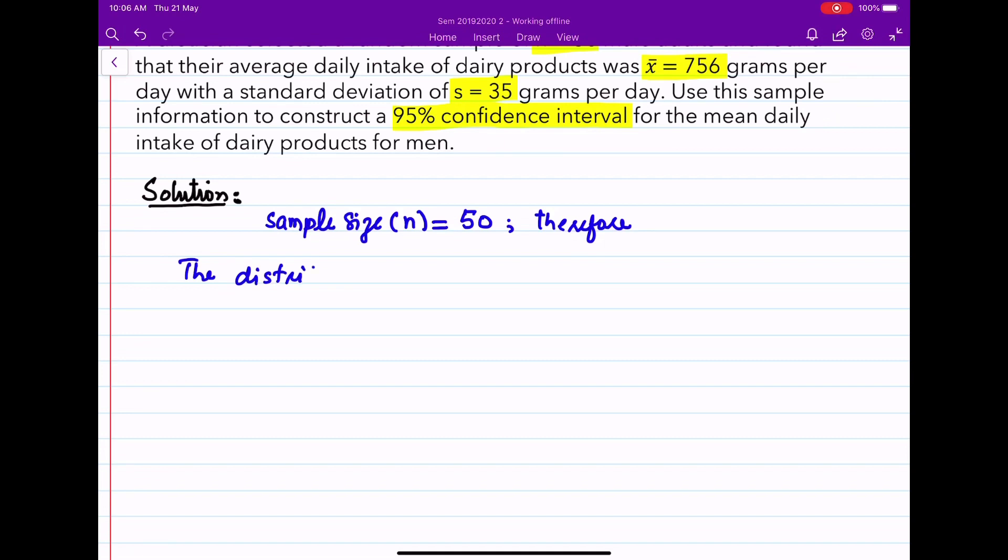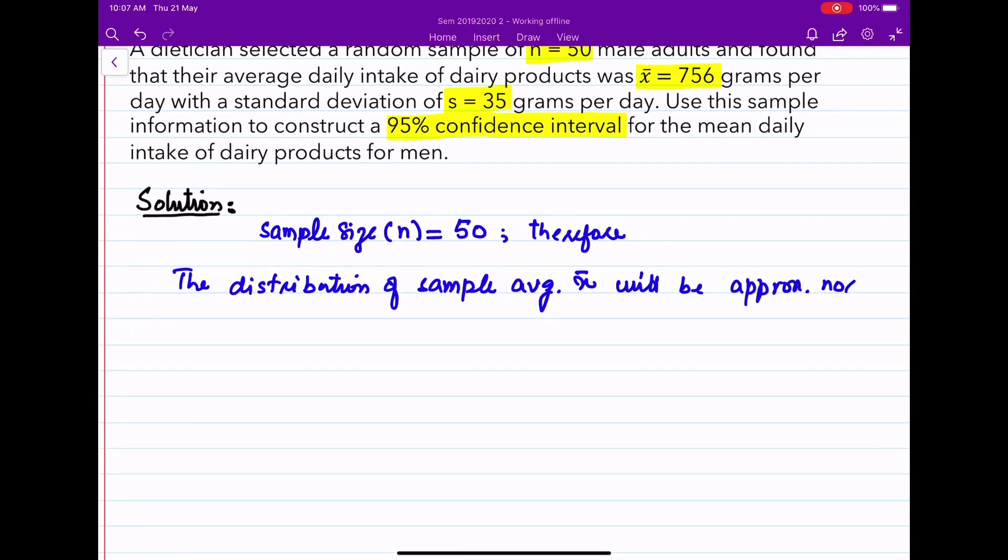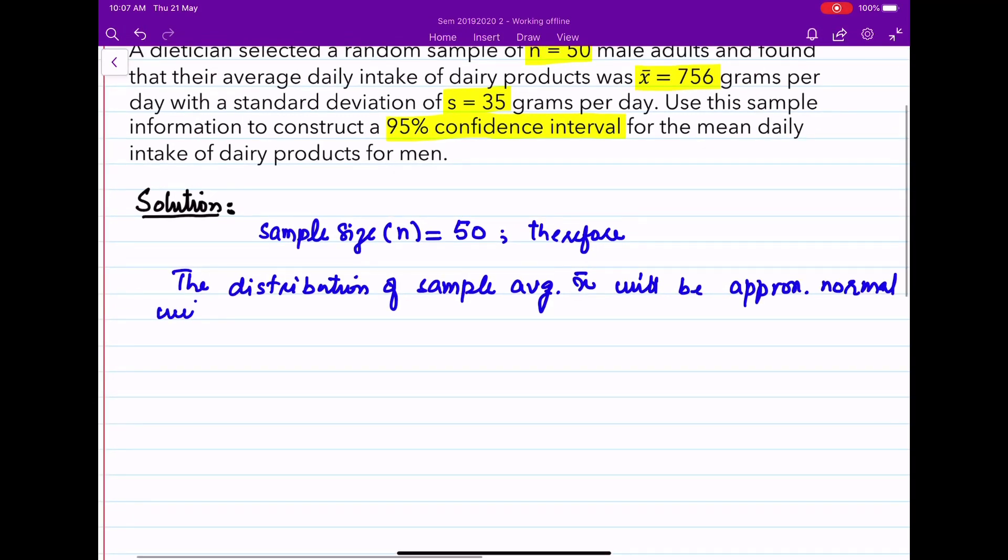has an approximately normal probability distribution. You remember that when n is greater than or equal to 30, we can assume that the statistic has normal distribution or approximately normal distribution with mean mu and standard error